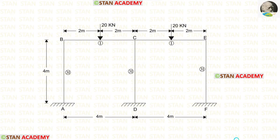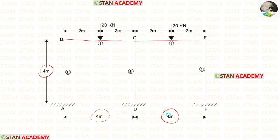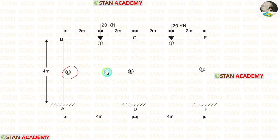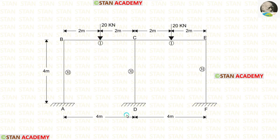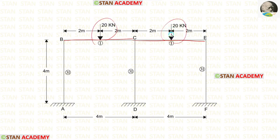This is a 1-story and 2-bay frame. Length of the columns are 4 meters. Length of the spans BC and CE are also 4 meters. The moment of inertia for the columns is 3I and for the beams is I. In the columns there are no loads, but in the spans BC and CE there are point loads of 20 kN acting at the center.